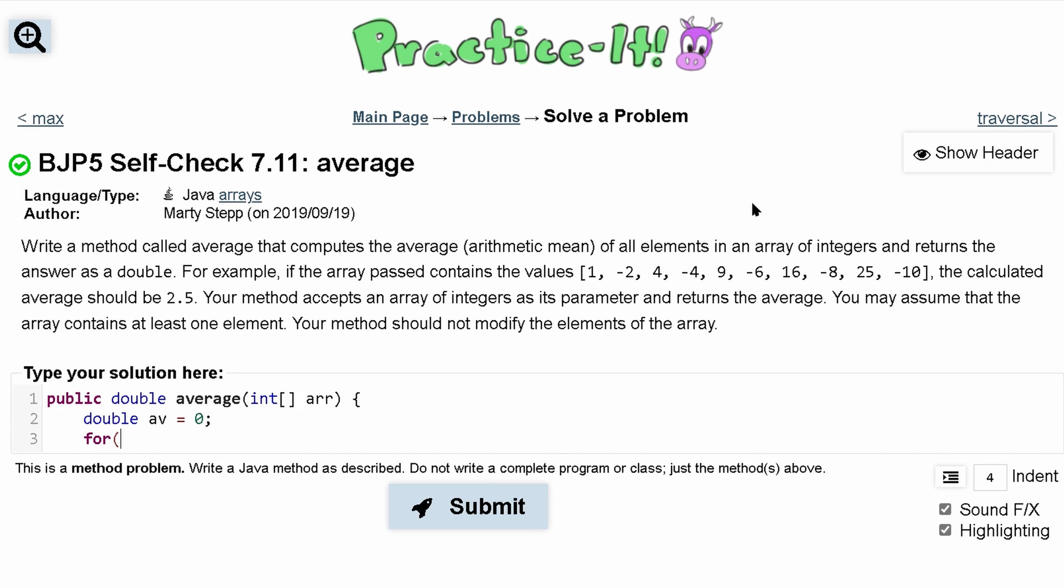Now we want a for loop to go through this entire array. We'll do a for loop with int a. Typically we'd set a equal to zero, but we can run this one less time, so we'll start it at one and set our average to be the first element of our array, arr at zero.